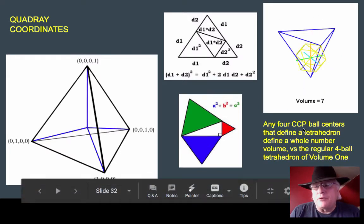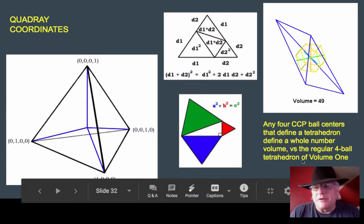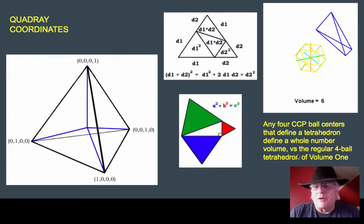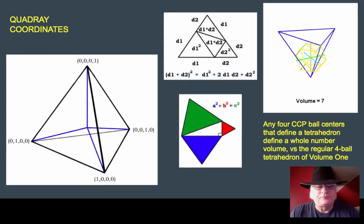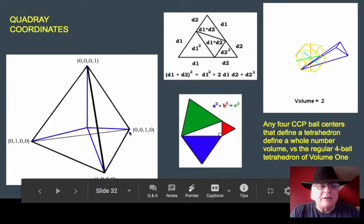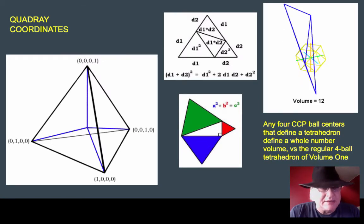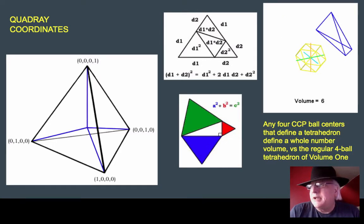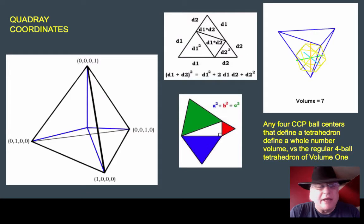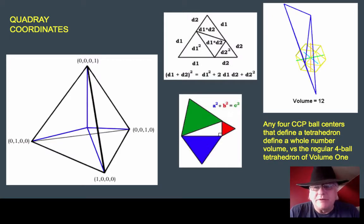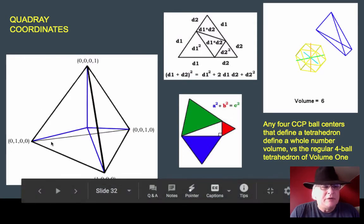So we're saying here that any four CCP ball centers that define a tetrahedron define a whole number volume, vis-a-vis the regular four ball tetrahedron of volume one. I'm going to leave this slide here. Remember the quad rays. And show you an empirical approach, not a proof. A proof wouldn't be that hard, and in fact, Bob Gray has done that. And actually, there's a more general version of it. But you can just take any tetrahedron and prove to yourself that moving any of the four corners by a hop is going to keep a whole number volume. And then by induction, it's always going to be a whole number volume. So you start with the regular tetrahedron, like the one here on the left. We call this volume one.